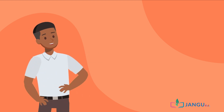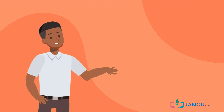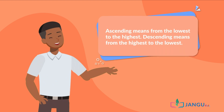Do you remember the meaning of ascending and descending order? Great! Ascending means from the lowest to the highest, while descending means from the highest to the lowest.